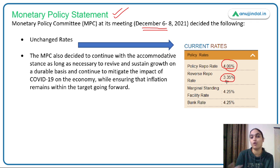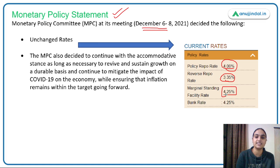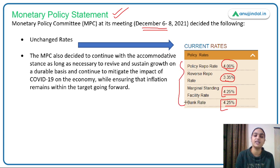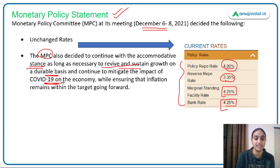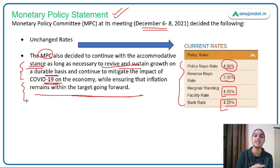The reverse repo rate, at which banks lend to RBI in exchange for government securities for the short term, is also kept the same at 3.35%. The Marginal Standing Facility rate — the rate at which banks can borrow from RBI in emergencies when the interbank market dries up — is kept the same at 4.25%. The bank rate, at which banks can borrow from RBI for a longer term, is also unchanged at 4.25%. All policy rates remain the same. The MPC has decided to continue with the accommodative stance as long as necessary to revive and sustain growth on a durable basis and to mitigate the impact of COVID-19, while ensuring inflation remains within the target levels.